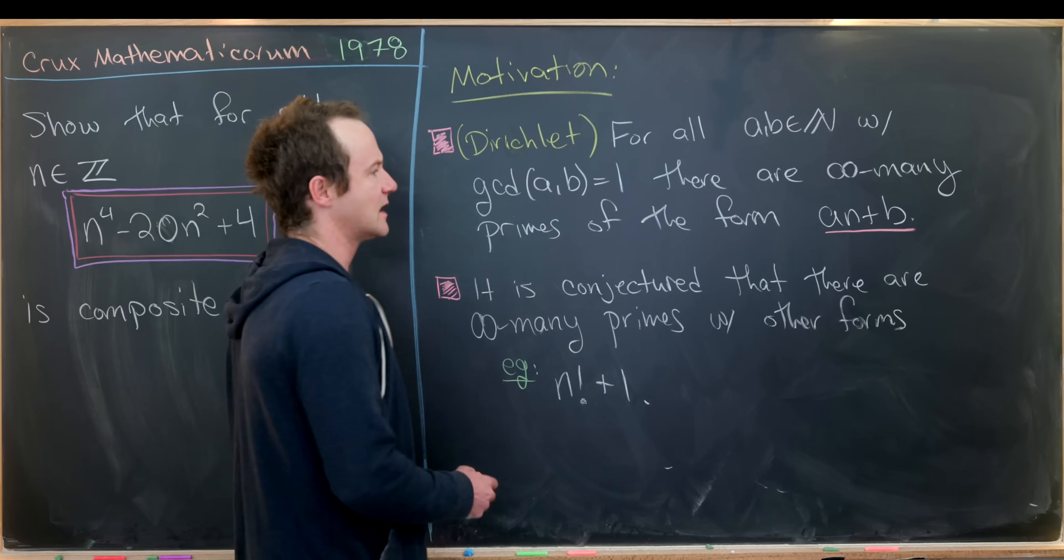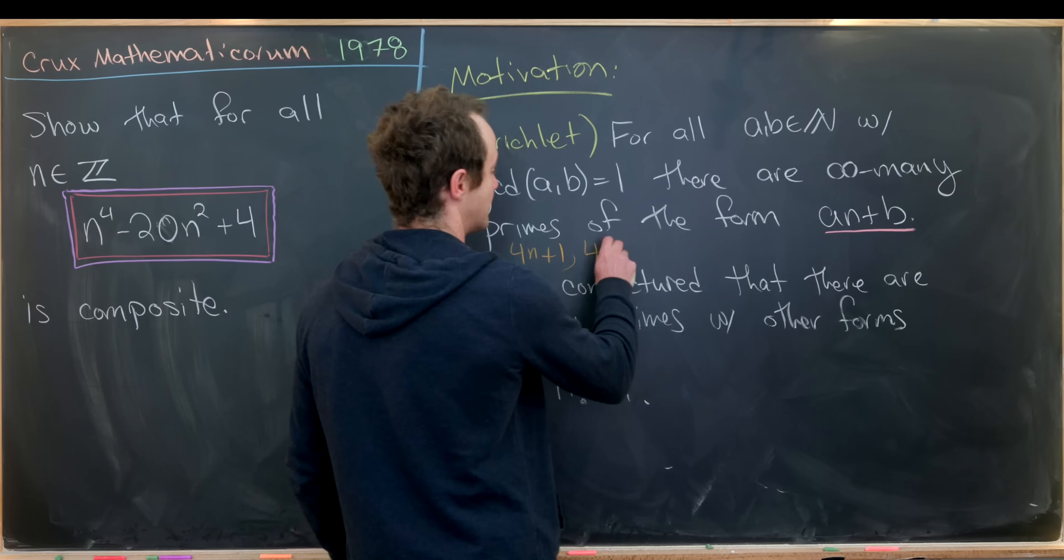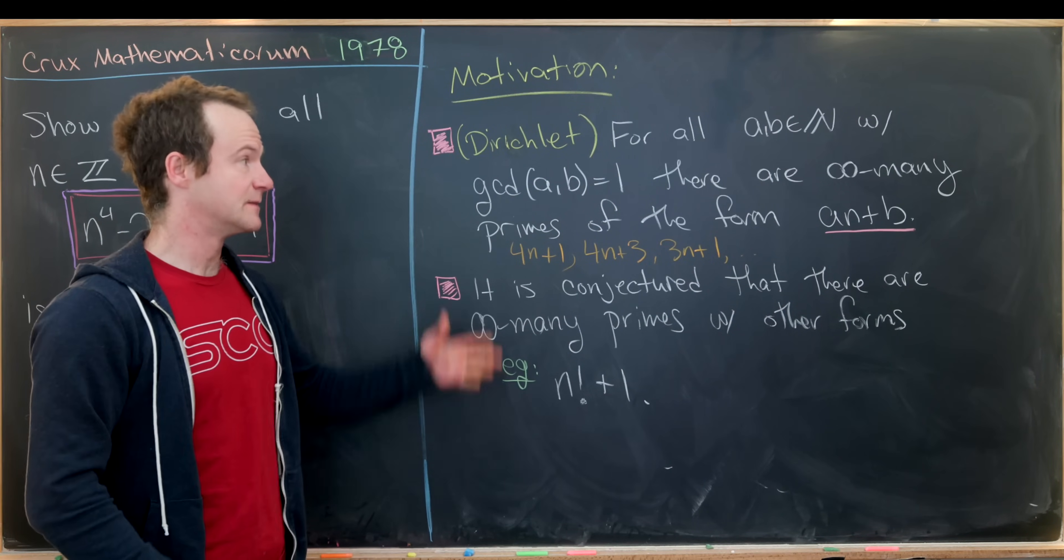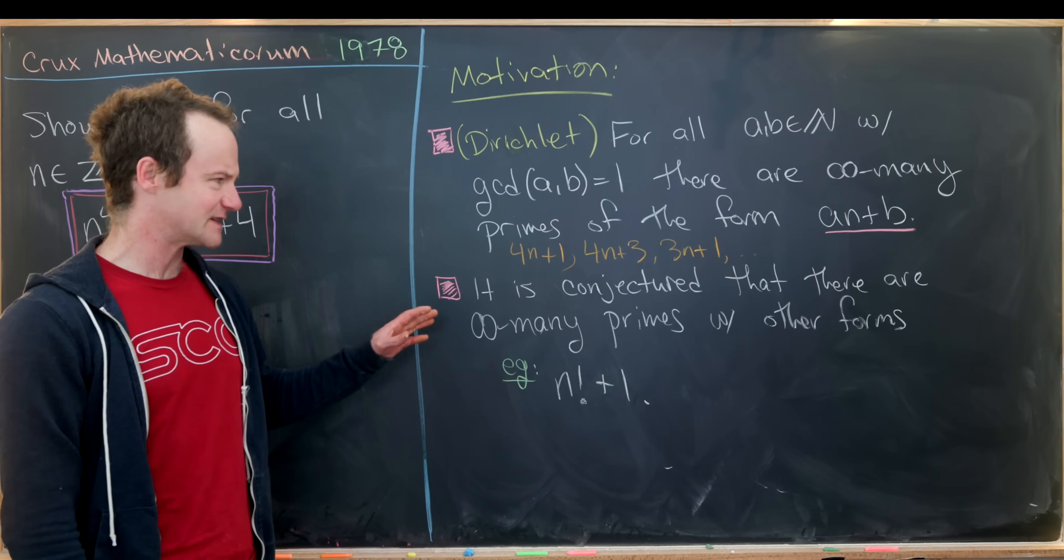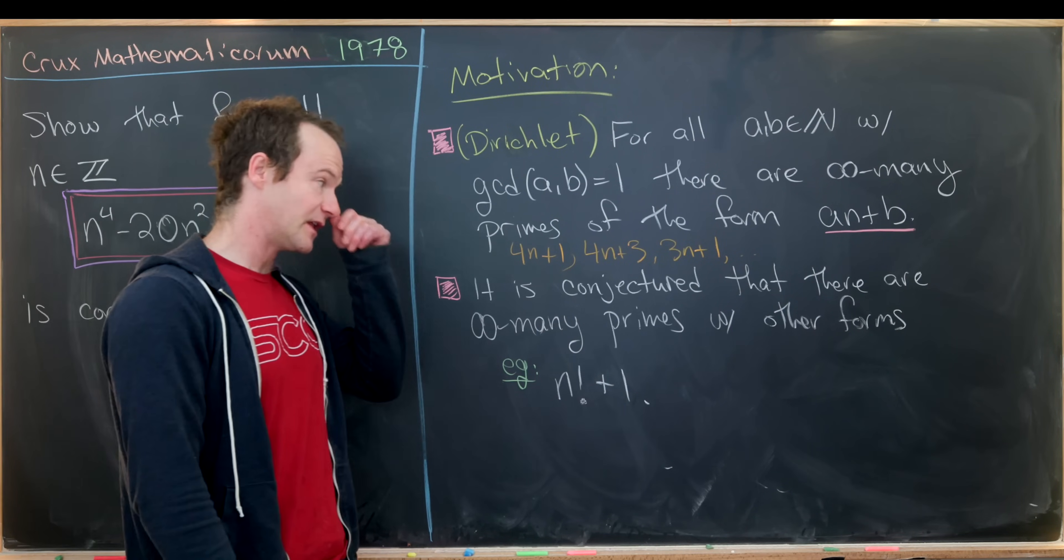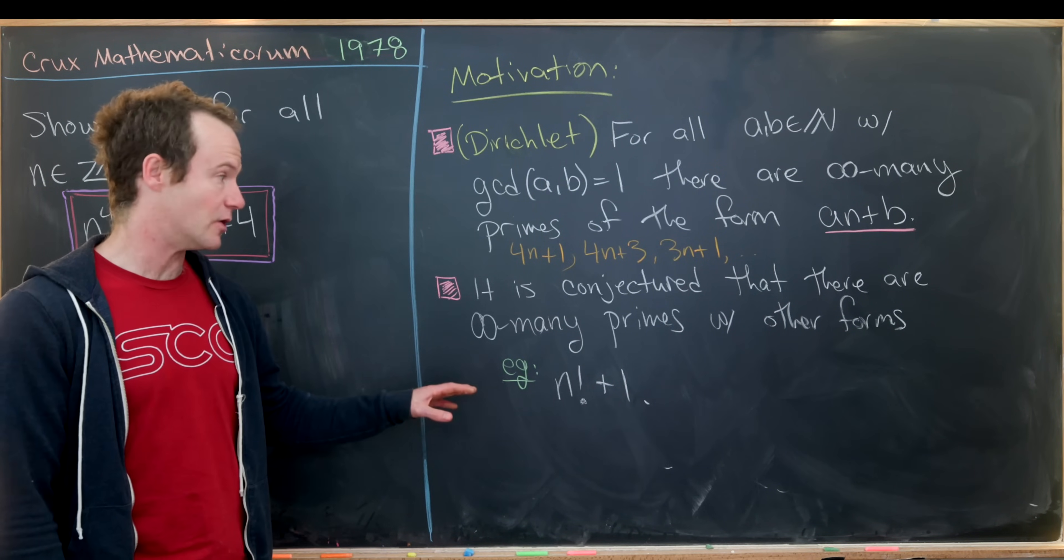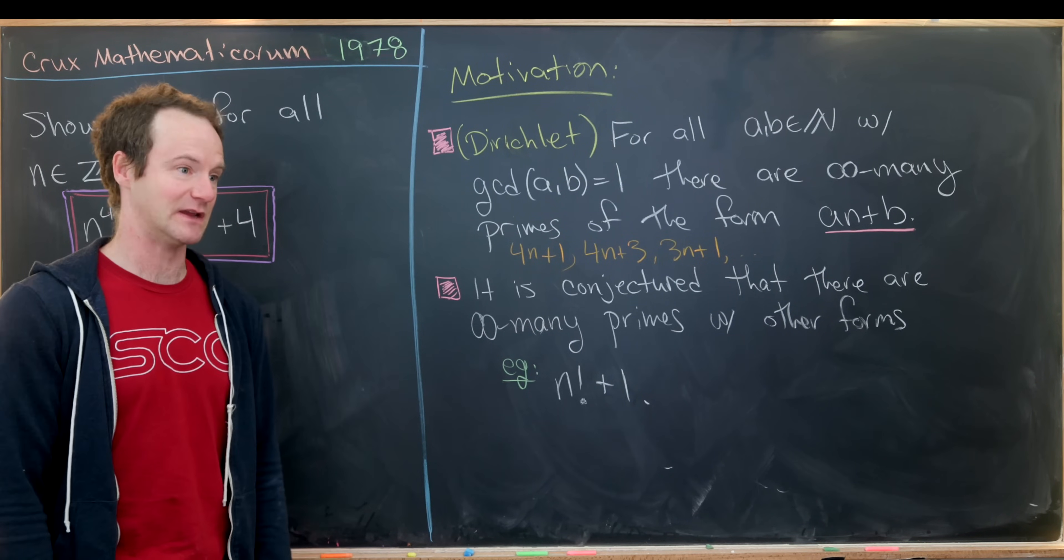If I remember correctly, I've got videos for primes of the form 4n plus 1, 4n plus 3, 3n plus 1, and maybe some others. This is a well-known result. There are infinitely many primes that have this linear form. That being said, it is conjectured, although not proven, that there are infinitely many primes with nonlinear forms, like n factorial plus 1. It is not known if there are infinitely many primes of this form or only finitely many.